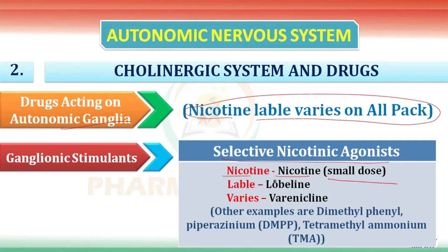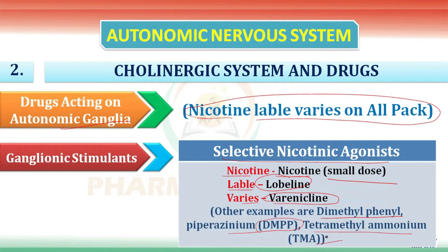Lobeline resembles lobeline; 'varies' stands for varenicline. Other examples of selective nicotinic agonists include dimethylphenyl piperazinium (DMPP) and tetramethylammonium (TMA).